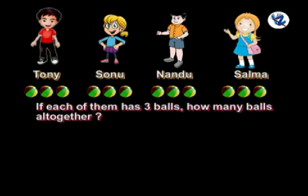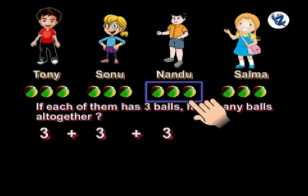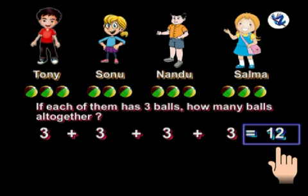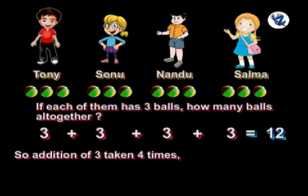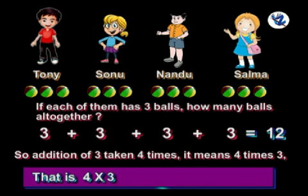We will make the addition. So, 3 plus 3 plus 3 plus 3 is equal to 12. Addition of 3 is taken 4 times. It means 4 times 3.